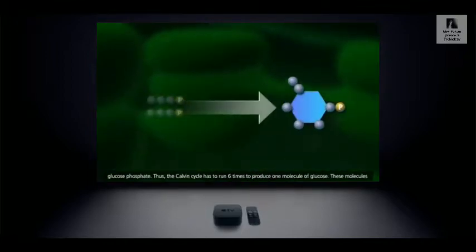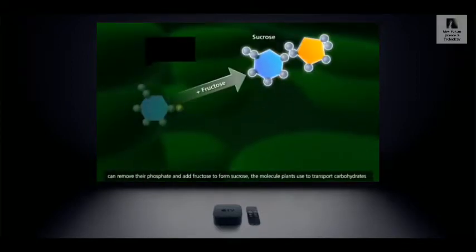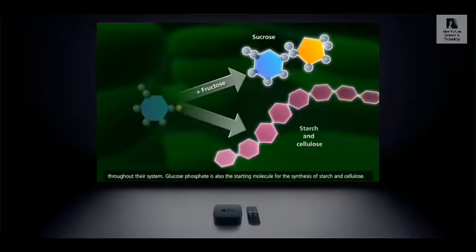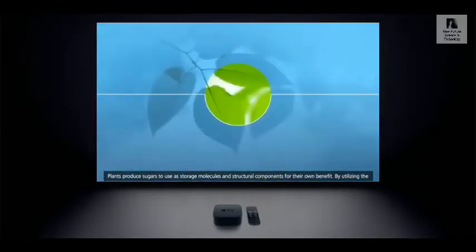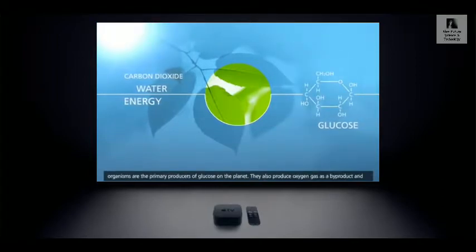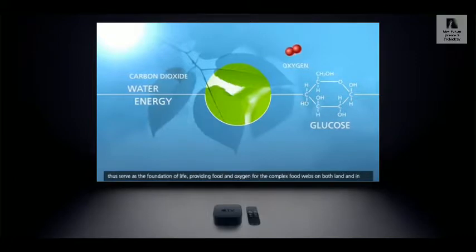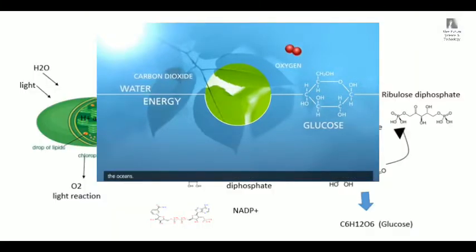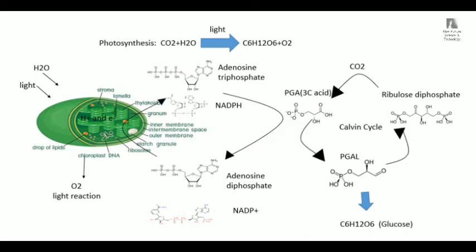Through very complex enzyme catalysis, glucose or fructose can be synthesized into the plant's energy storage material — starch — and its energy transport material — sucrose. At the same time, these sugars can also be converted into lipids. The plant can also absorb inorganic salts to produce amino acids, proteins, and nucleic acids. In short, these sugars continue to be transformed into lipids and proteins, all of which we can eat from plants.